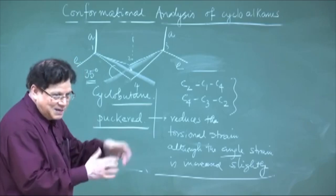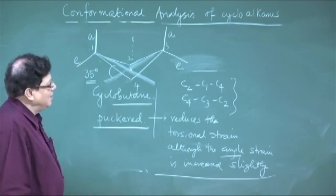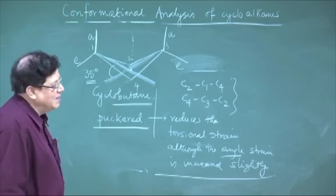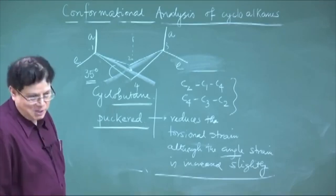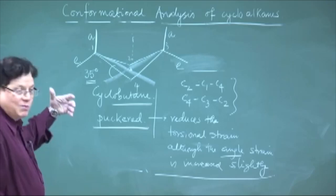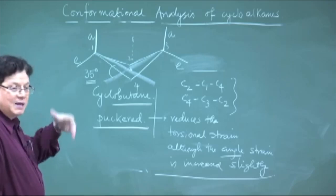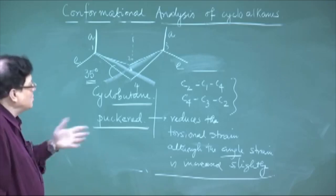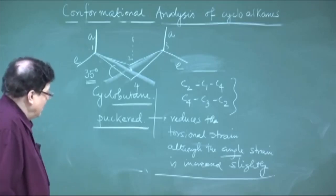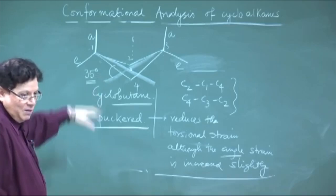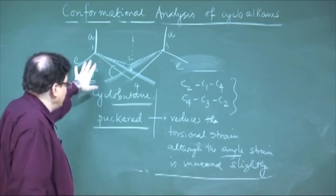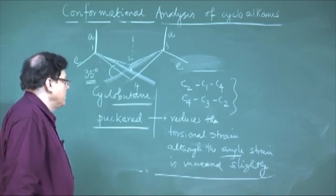In cyclopropane, nobody bothers about torsional strain because the angle strain is very high. In cyclobutane, you now have to bother because the angle strain is not that high. Torsional strain becomes the dominant factor in adopting a conformation with less energy in cyclobutane. This is the conformation of cyclobutane.